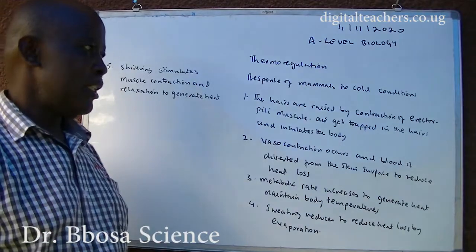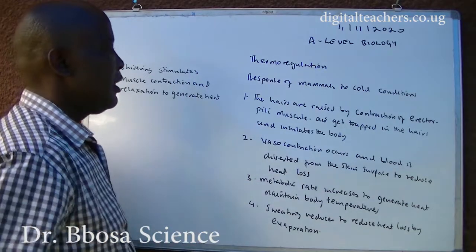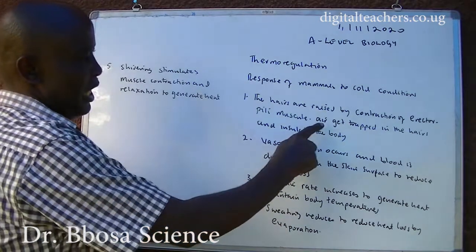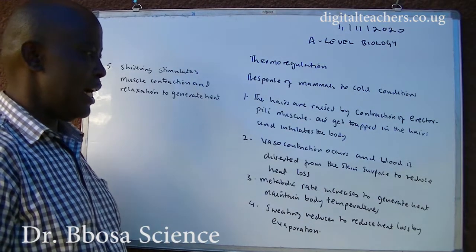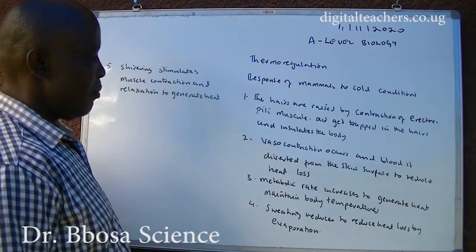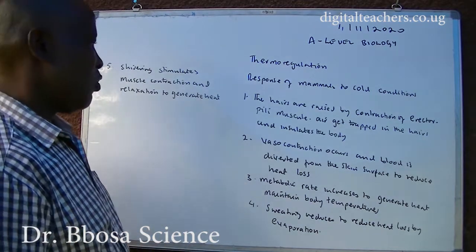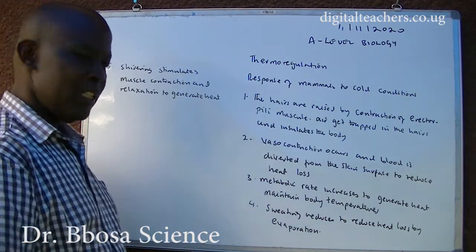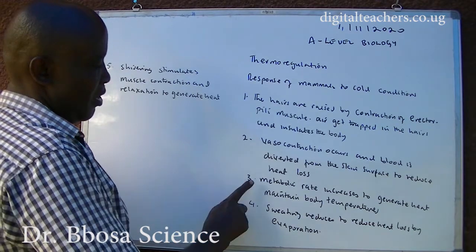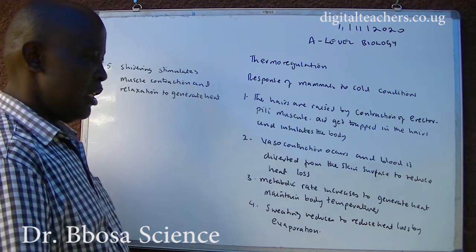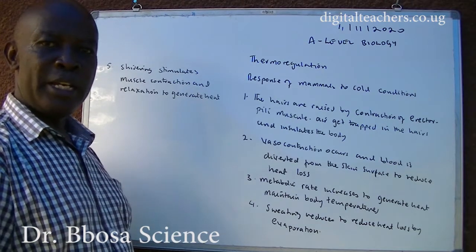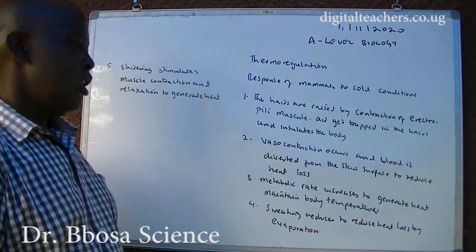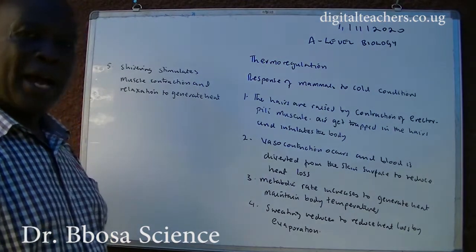Responses of mammals to cold conditions: 1. Hairs are raised by contraction of erector pili muscles; air gets trapped in the hairs and insulates the body. 2. Vasoconstriction occurs and blood is diverted from the skin surface to reduce heat loss. 3. Metabolic rate increases to generate heat to maintain body temperature. 4. Sweating reduces to reduce heat loss by evaporation.